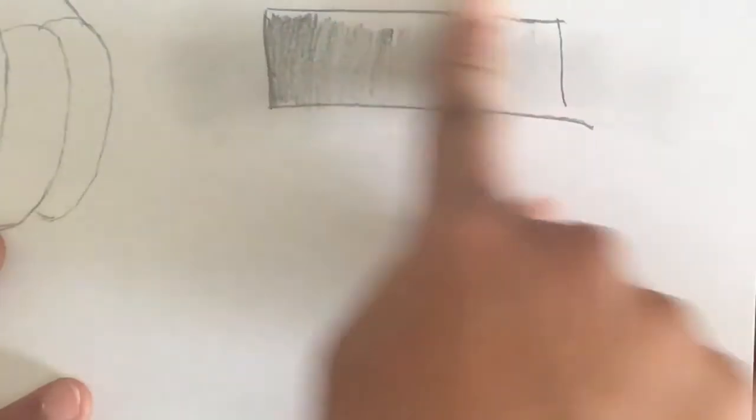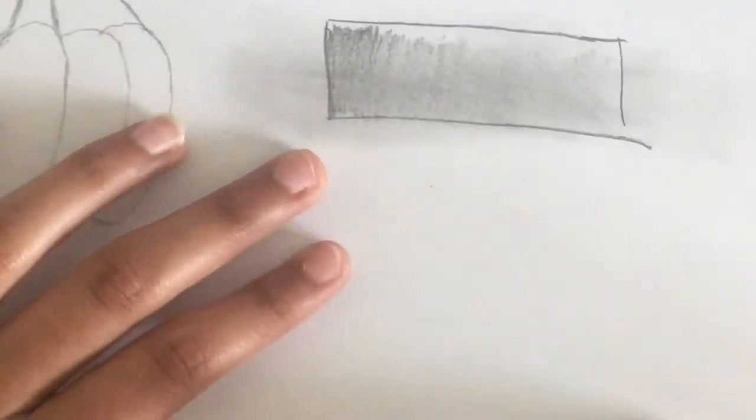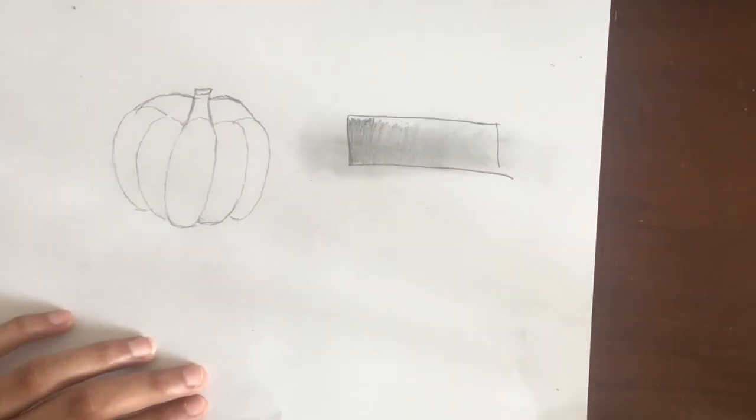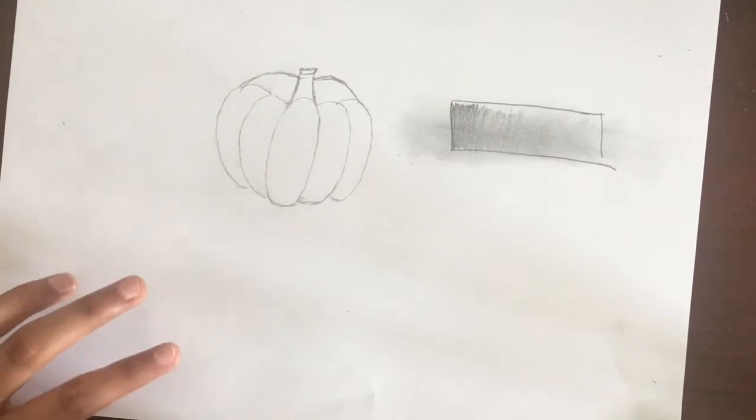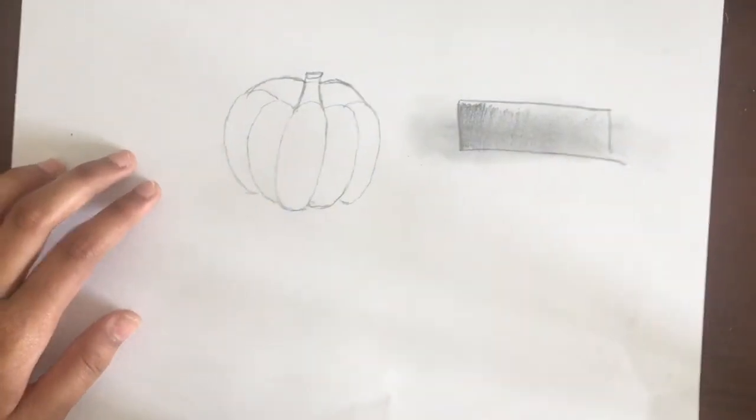Then you just rub your finger to get it more blended in. Okay, I really messed up over here. Is this a thing? Are we even allowed to erase while we're blending?